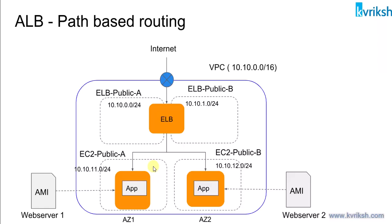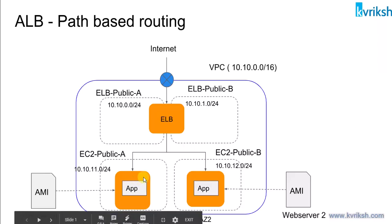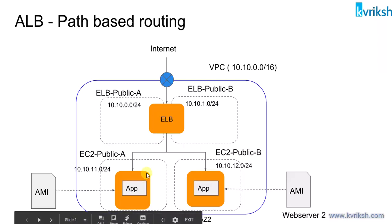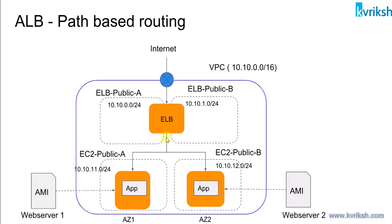We'll create a VPC, create four subnets — two for ELB and two for EC2 instances — then launch EC2 instances in each subnet, launch the elastic load balancer in two public subnets, create a target group, attach the EC2 instances to the target group, and attach the target group to the elastic load balancer.